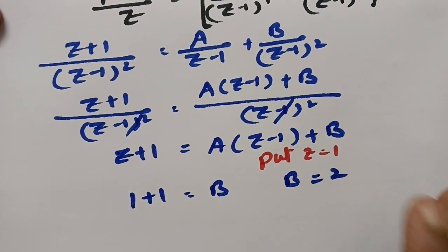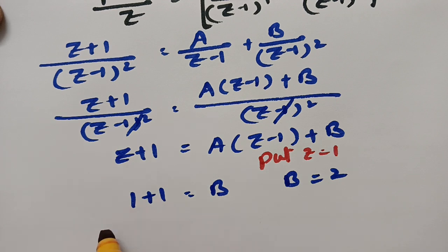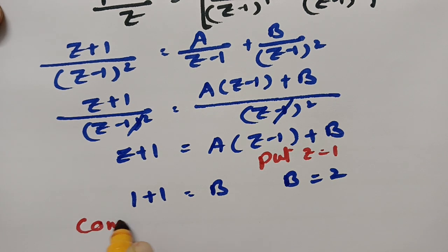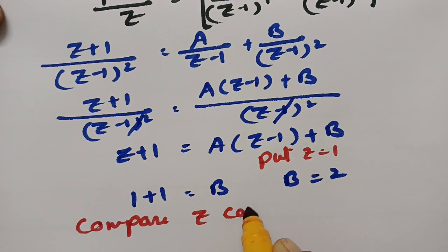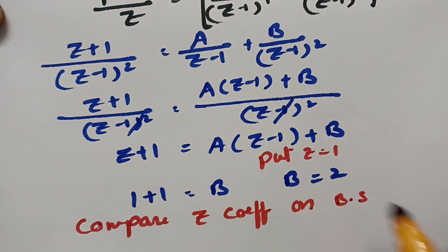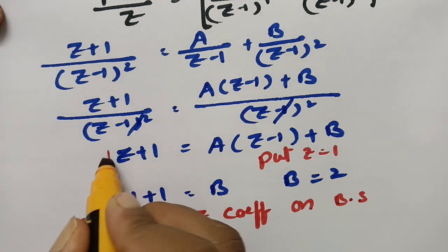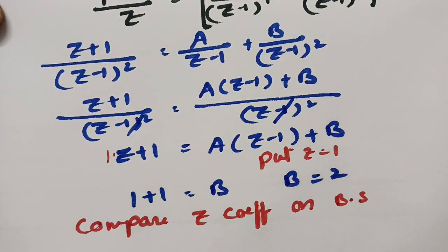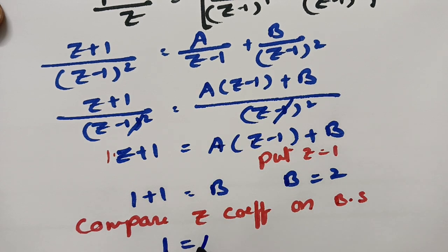Since there is no other substitution possible, I am comparing Z coefficients on both sides. The Z coefficient on the left side is 1, and the Z coefficient on the right side is A. Therefore, A is equal to 1.